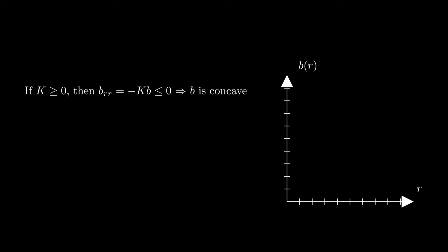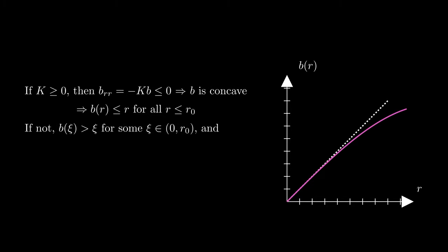The proof for when k is non-negative is almost identical. From the Jacobi equation, b_rr is non-positive, so b is concave and b of r is always less or equal than r along the interval (0, r0). Otherwise, b of xi is greater than xi for some xi. Then by concavity, the graph of b lies above the line with slope 1. This would imply that the limit of b of r over r as r goes to 0 is greater than 1, which is impossible. The rest of the proof is the same as before, just with inequalities reversed.